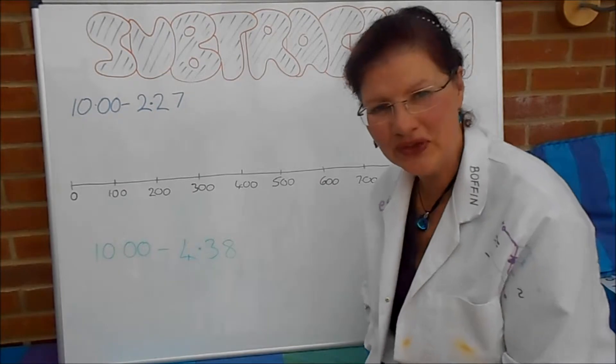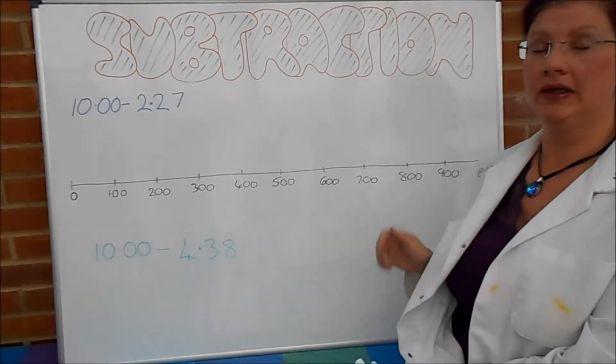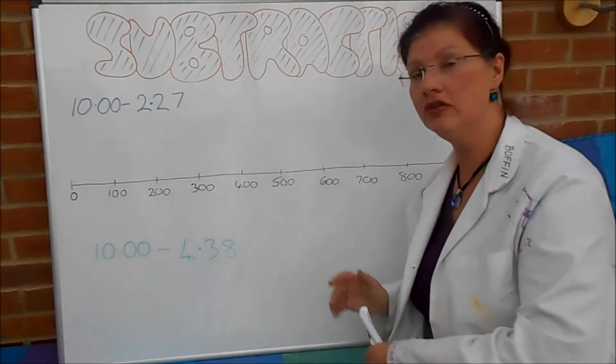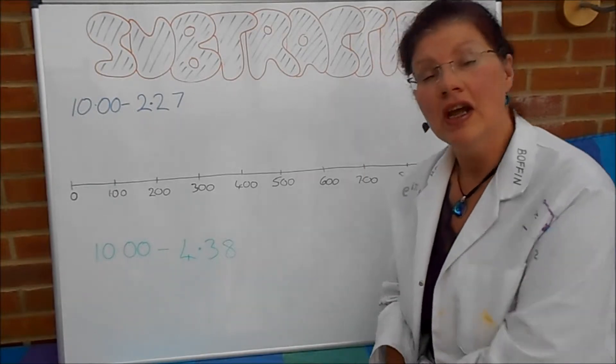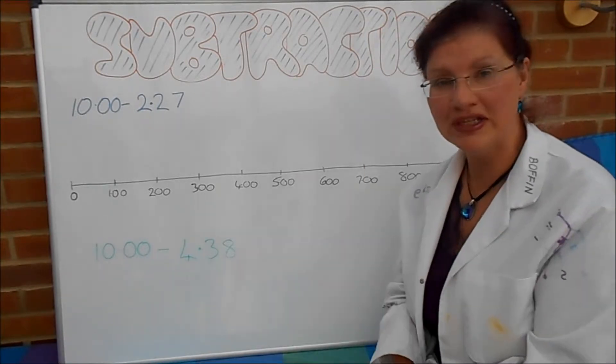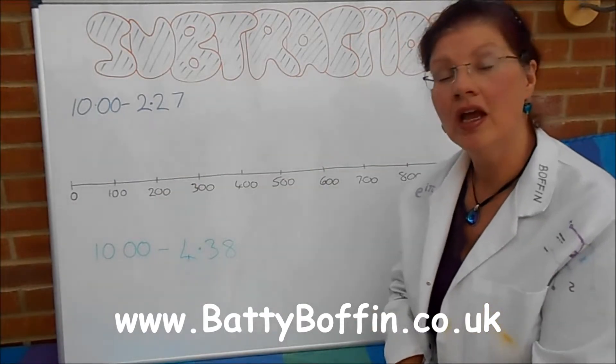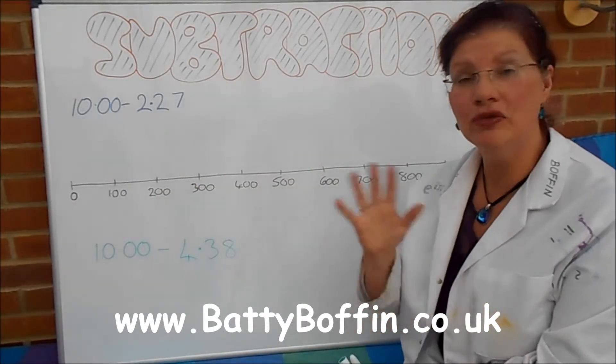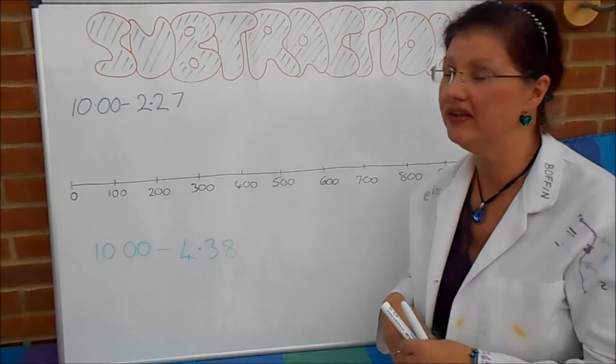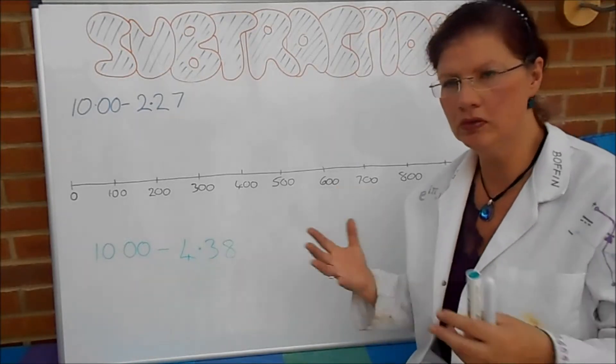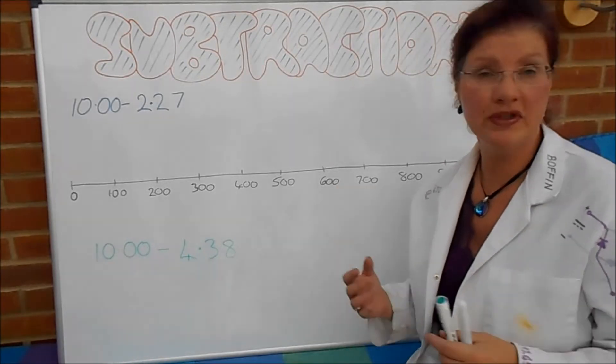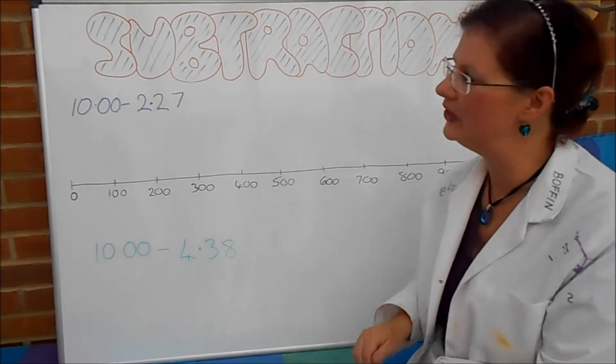Right, here are some for you to try. Now, here, I've drawn you a number line, which some people find helpful, and if you like to use a number line, you go ahead and use it. There are quite a lot available for you to print out at www.battyboffin.co.uk. Pop along there to the download site, and you'll find a whole load of different number lines, and there's graph papers and grid papers, and all kinds of different things.